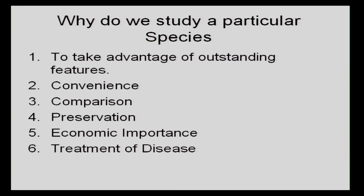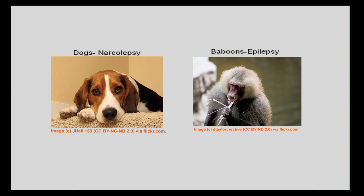The last reason is treatment of disease. There are particular species of animals more likely to get particular diseases, and we study those species to understand both the vulnerability and have a large population of the affected animal to study. Narcolepsy can be quite common in dogs and beagles in particular. Baboons have a relatively high incidence of epilepsy, which is a very common and can be debilitating disease. You'll learn about patient H.M. who had severe epilepsy — even today, first diagnosed in the 1950s, we are still looking for important cures and remedies for epilepsy, and the baboon model is very useful for that.